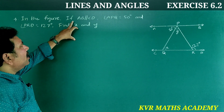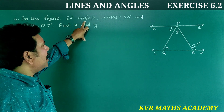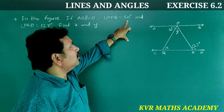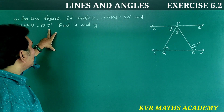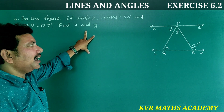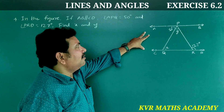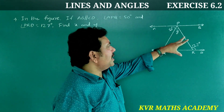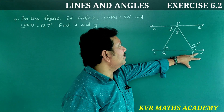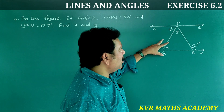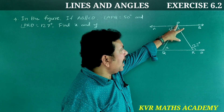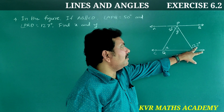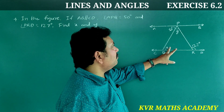4th question: In the figure, if AB is parallel to CD, angle APQ is equal to 50 degrees, and angle PRD is equal to 127 degrees. Find X and Y. Given: AB is parallel to CD, angle APQ = 50 degrees, angle PRD = 127 degrees. Find X and Y.